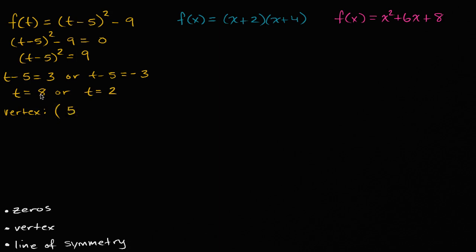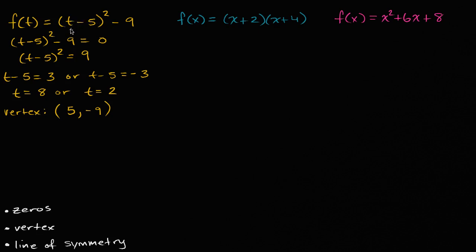So the t-coordinate is five — five is three away from eight and three away from two. When t equals five, (5 - 5)² = 0, so f(5) = -9. This form of the function is actually called vertex form, because it's very easy to pick out the vertex. We hit a minimum when the squared part equals zero, since squaring can never give a negative value. It equals zero when t = 5, giving f(5) = -9. So the vertex is (5, -9).